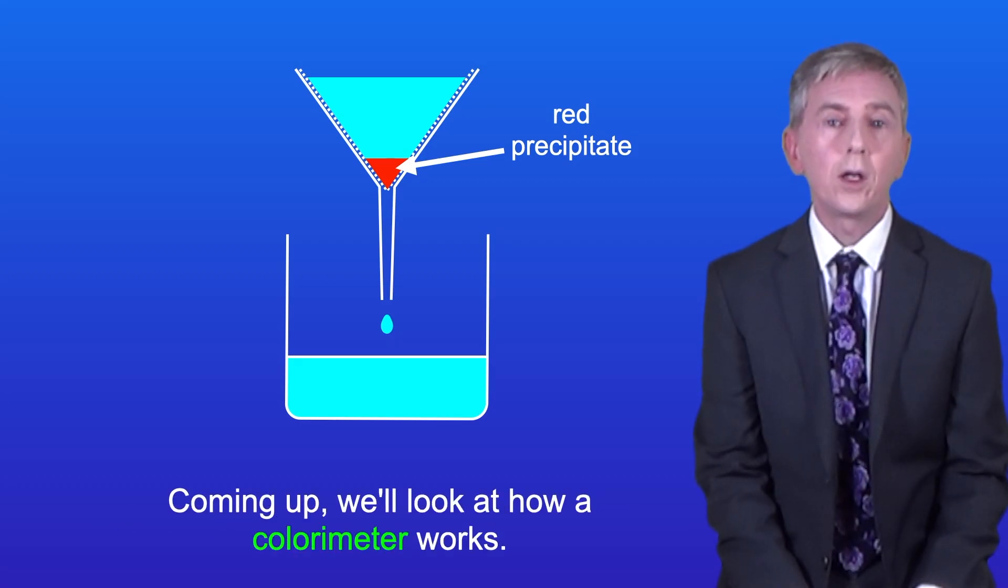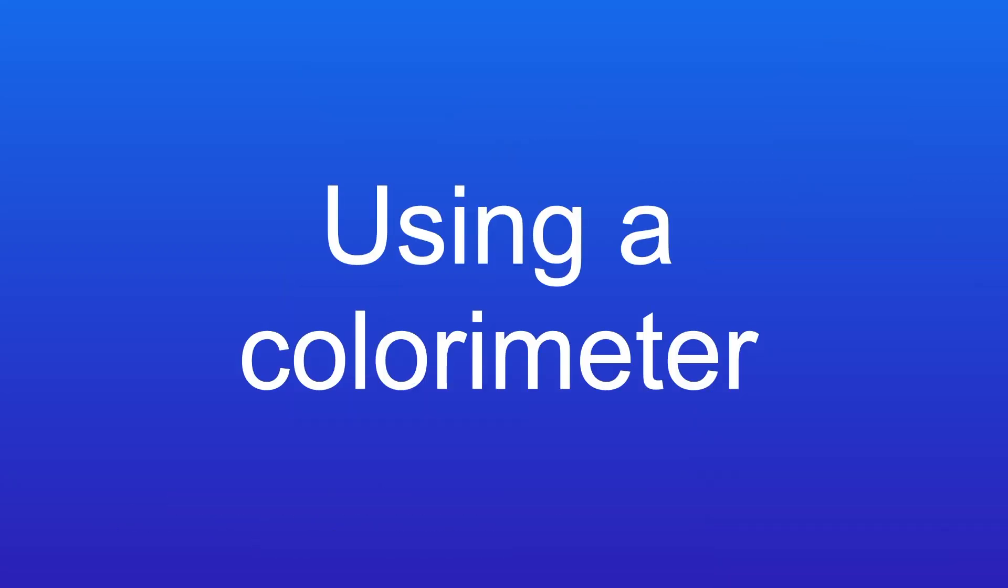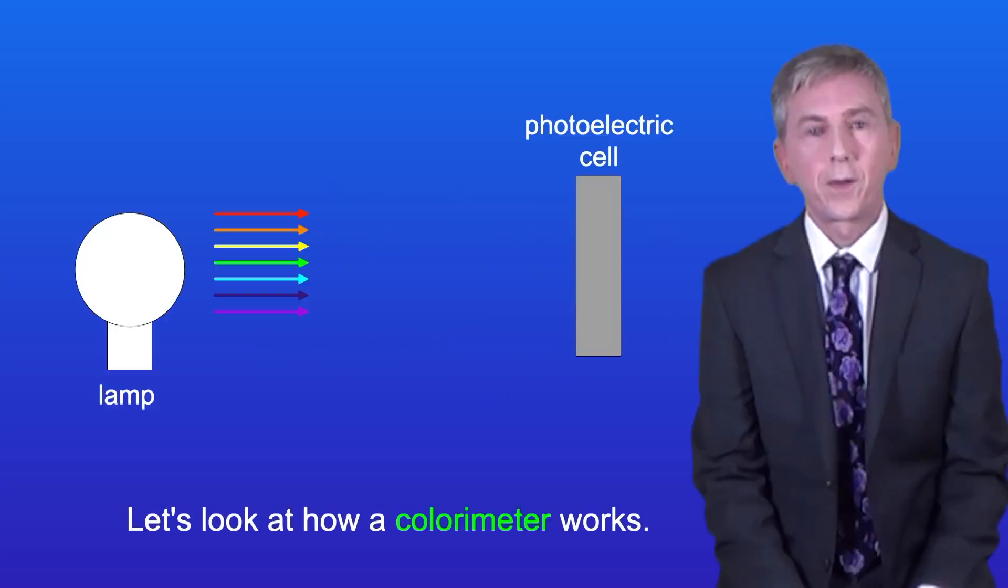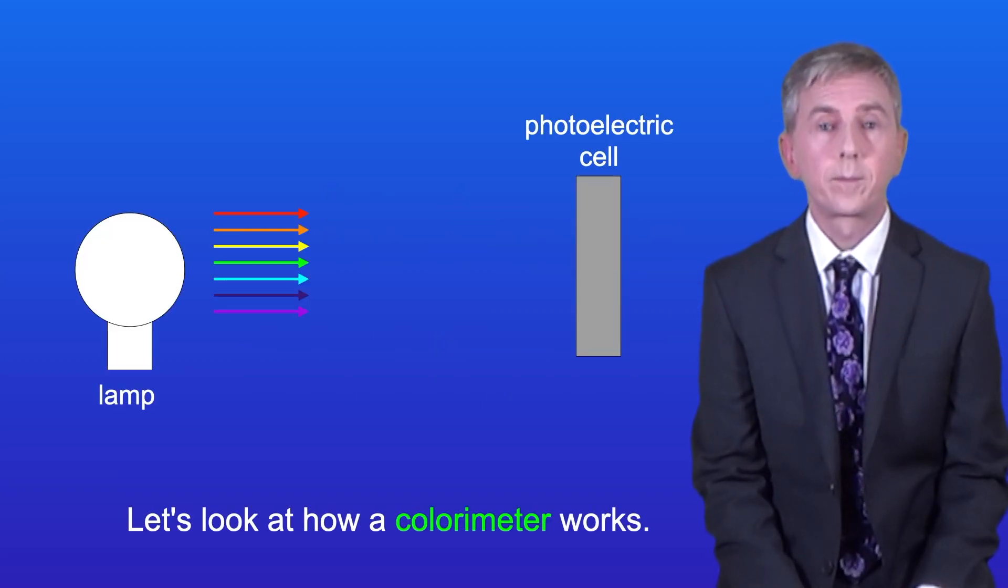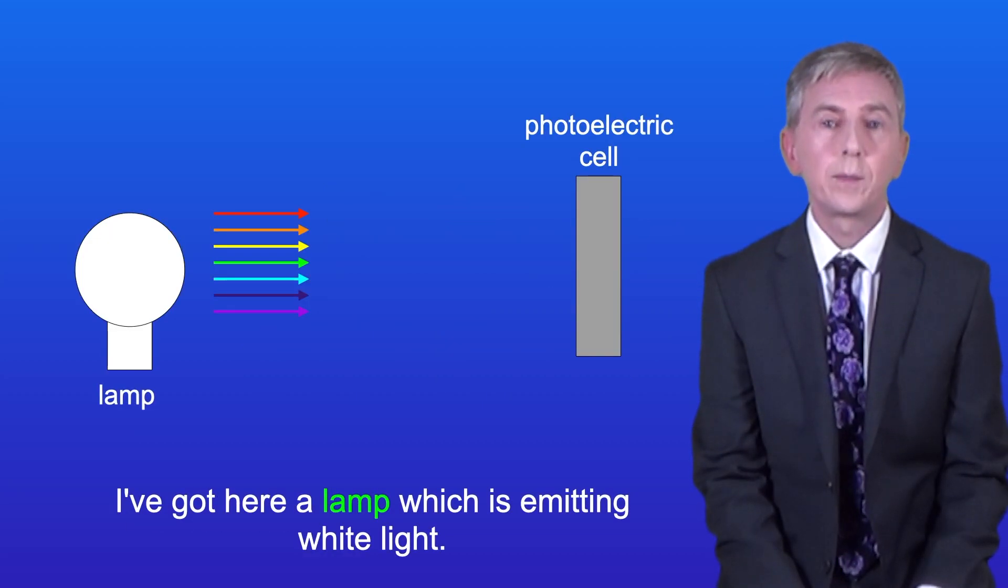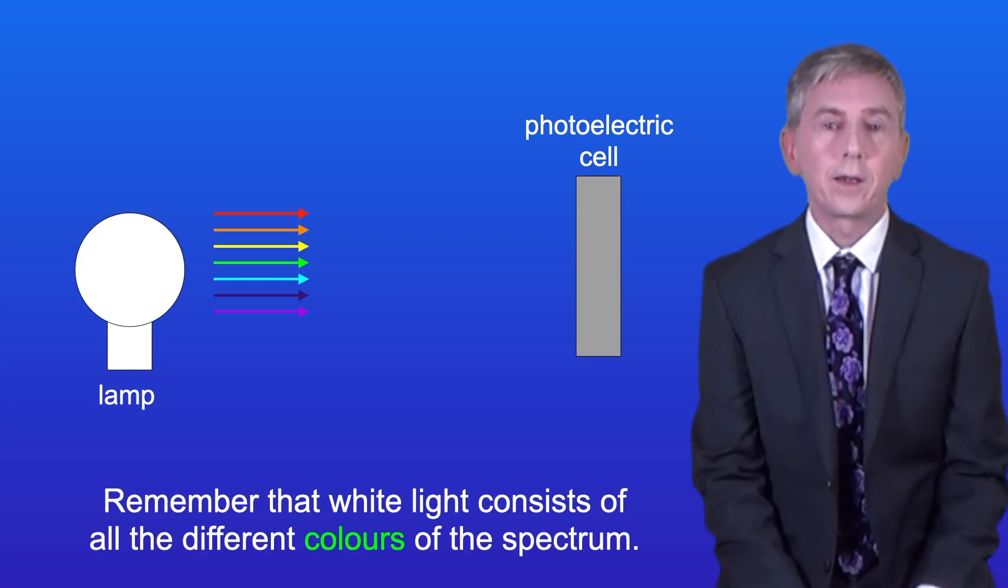Coming up, we'll look at how a colorimeter works. Okay, let's look at how a colorimeter works. I've got here a lamp which is emitting white light. Remember that white light consists of all of the different colors of the spectrum.